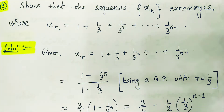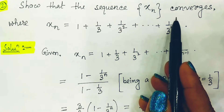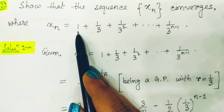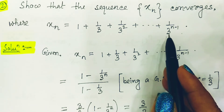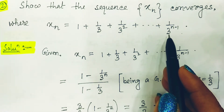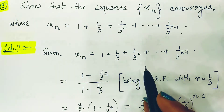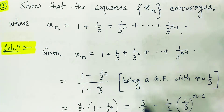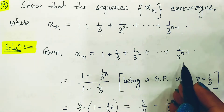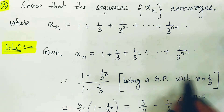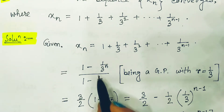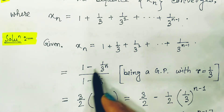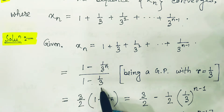For the next example, a sequence xn = 1 + 1/3 + 1/3² + ... up to n terms is given, and we verify whether it is convergent. This is a GP sequence with common ratio r = 1/3. Applying the finite GP formula, we get xn = (1 - (1/3)^n) / (1 - 1/3).